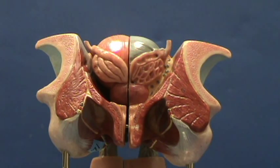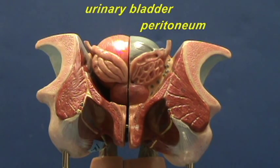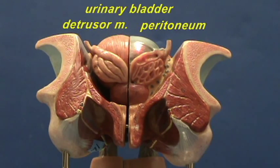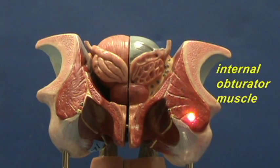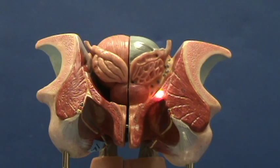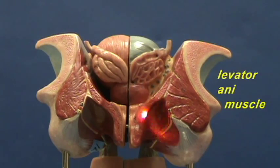Right over here on the top we have the urinary bladder. On this side the peritoneum is still present, but here on this side it has been stripped off, so you can see the detrusor muscle of the urinary bladder. Here on either side are the ureters. Other structures that are visible include the internal obturator muscle, which is on this side and on this side. And this muscle right over here, which is coming down and supporting the pelvic floor, coming on either side of the anus, is the levator ani muscles.